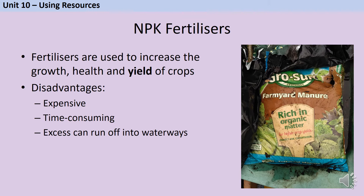Fertilisers are substances that farmers spread on their fields in order to make their crops grow faster, be healthier, and generally increase the yield. A crop is any plant you're planning to eat, and the yield is about how much food you can make from a field of a certain size. Improving all of these things is good for farmers, but there are some disadvantages. Fertilisers can be quite expensive and time-consuming to spread, and if you add too much it can cause major environmental problems.